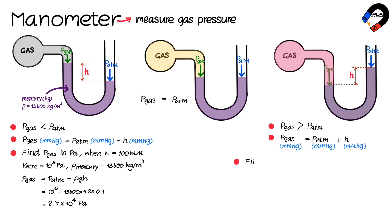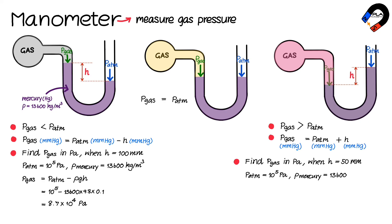For example, to find the gas pressure in pascals when h = 50 millimeters, atmospheric pressure is 10⁵ pascals, and the density of mercury is 13,600 kilograms per cubic meter.